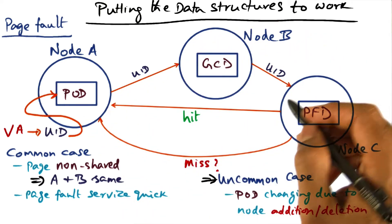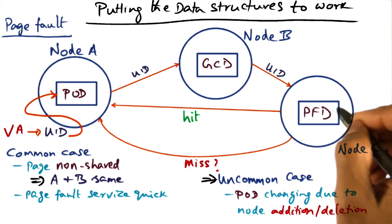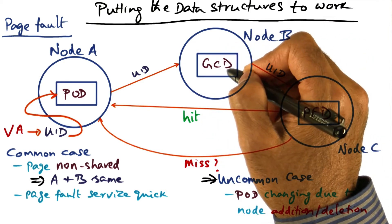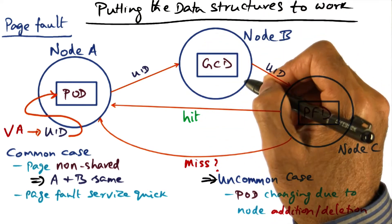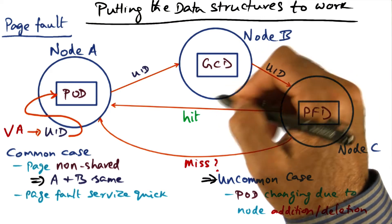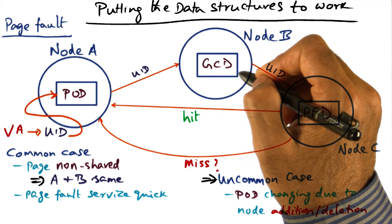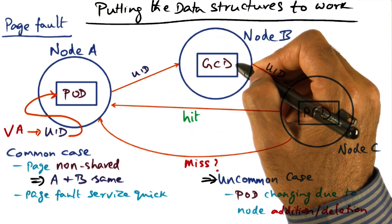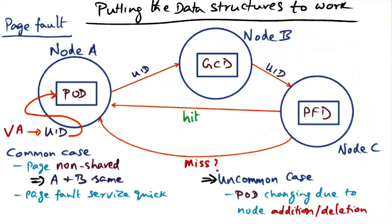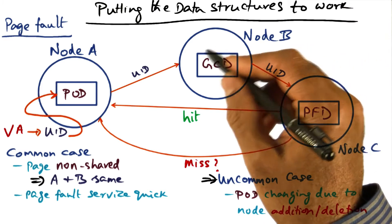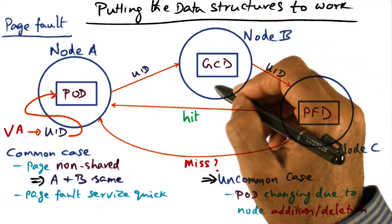But it's a distributed system, things are happening asynchronously. He may not have communicated that yet, that information is not there in the GCD of this node. This is the owner for this UID space, but the owner doesn't yet know that the PFD that corresponds to a particular UID has moved to some other node. He will know about it eventually, but he doesn't have it at this point.